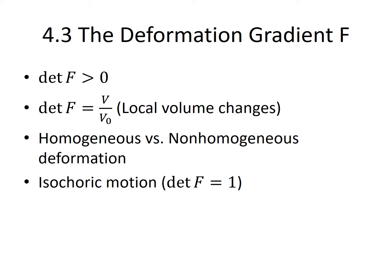In general, for the types of deformation we deal with in solid mechanics, the determinant of F is always greater than zero. The determinant of F also gives the local ratio between the volume after deformation to the volume before deformation. If F is not a function of position, the deformation is termed homogeneous; otherwise it's called non-homogeneous deformation. If the motion is volume preserving it is termed isochoric motion; in that case the determinant of F is equal to 1.